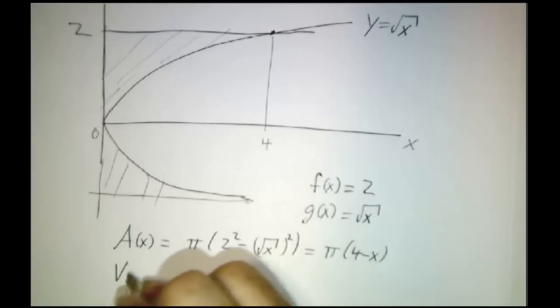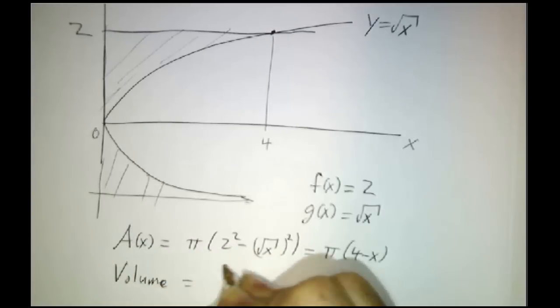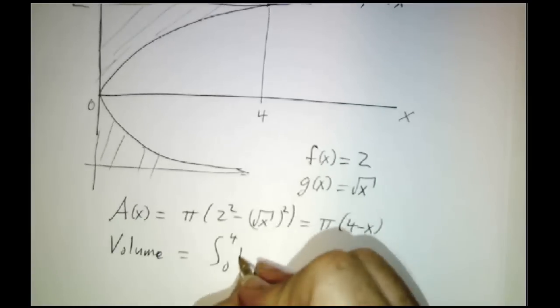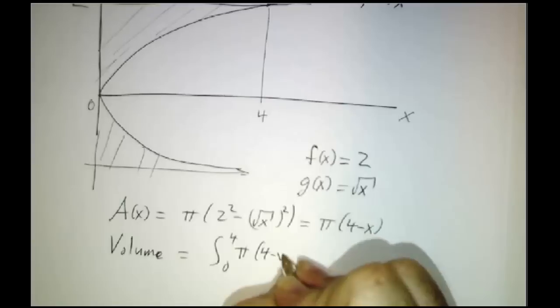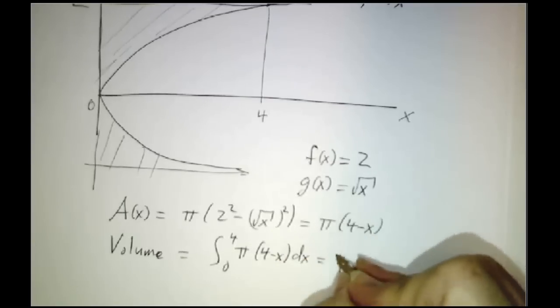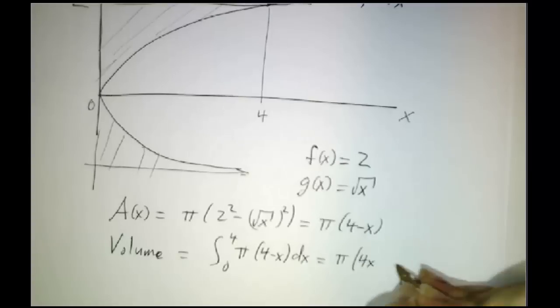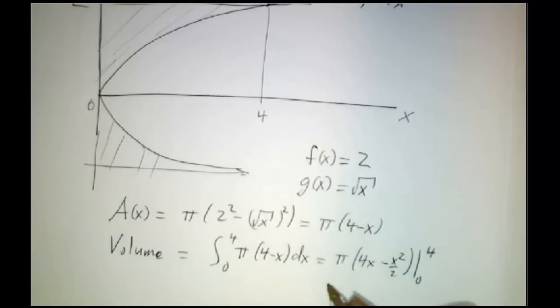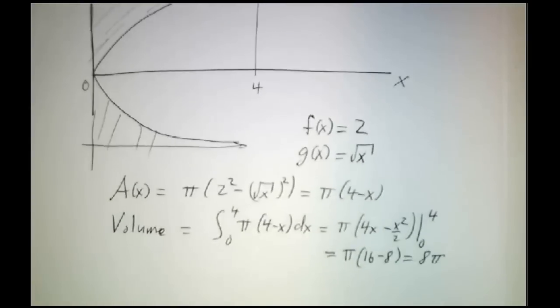And our volume is the integral from 0 to 4 of pi times 4 minus x dx. And that gives you pi times 4x minus x squared over 2. Evaluate it at 0 and at 4. And that gives you pi times 16 minus 8, which is 8 pi. So the volume of this whole region is 8 pi.